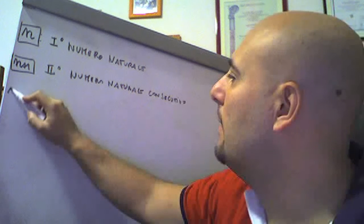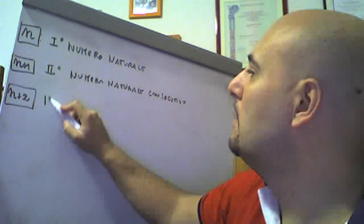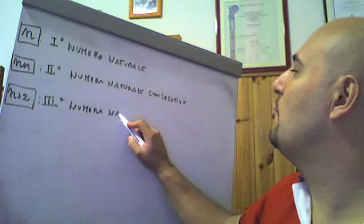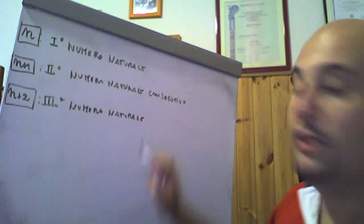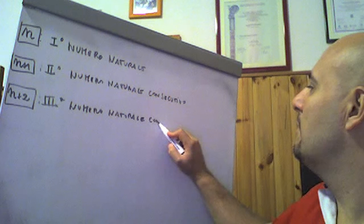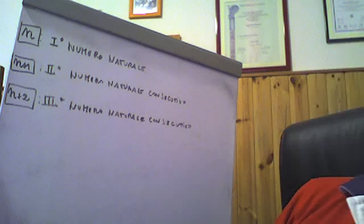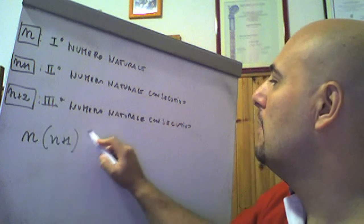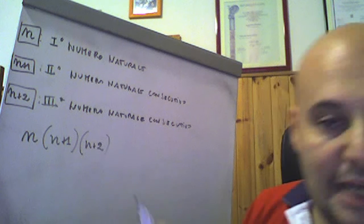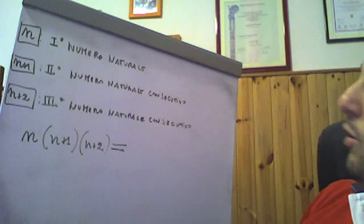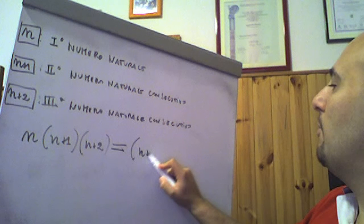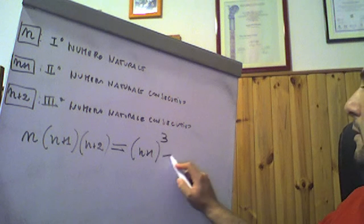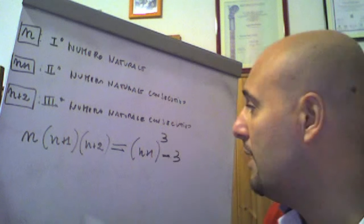Il terzo numero naturale consecutivo è n+2. Si dice che il loro prodotto, quindi il prodotto fra n, n+1 ed n+2, sia uguale al cubo del secondo, al cubo di n+1, diminuito di 3, quindi meno 3. La variabile è l'incognita n, come se fosse x, non cambia niente, moltiplichiamo.